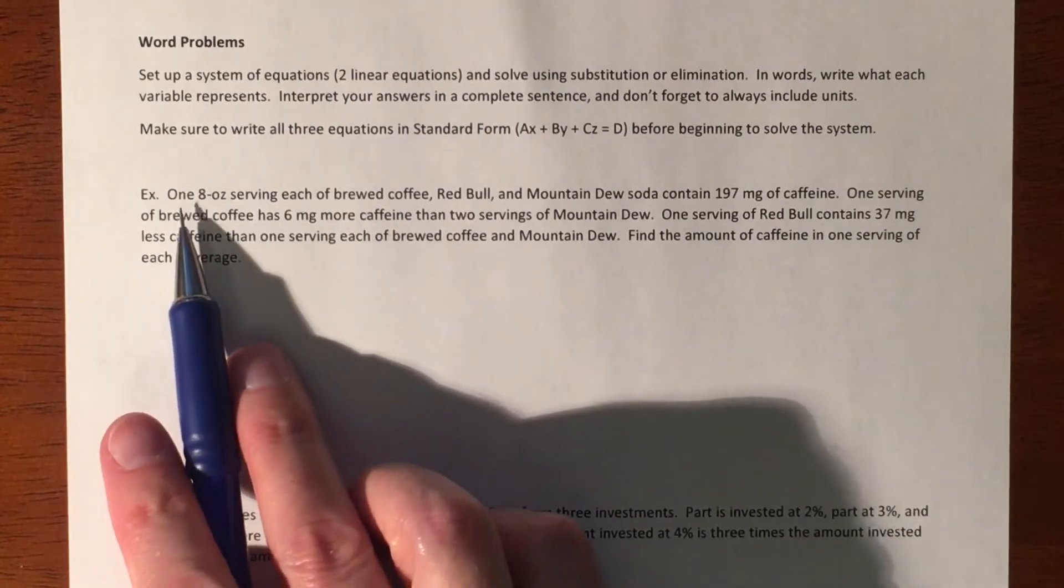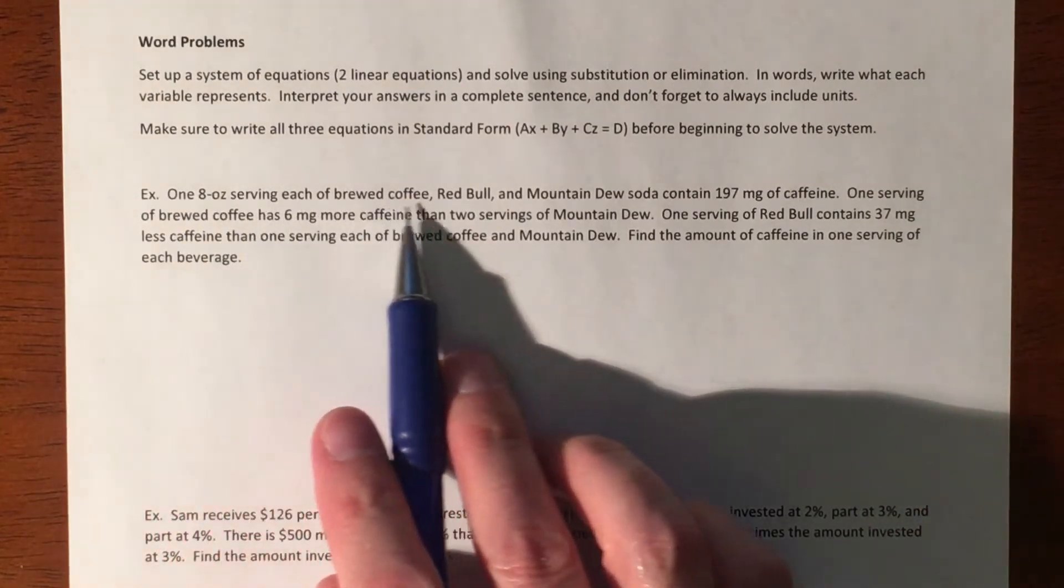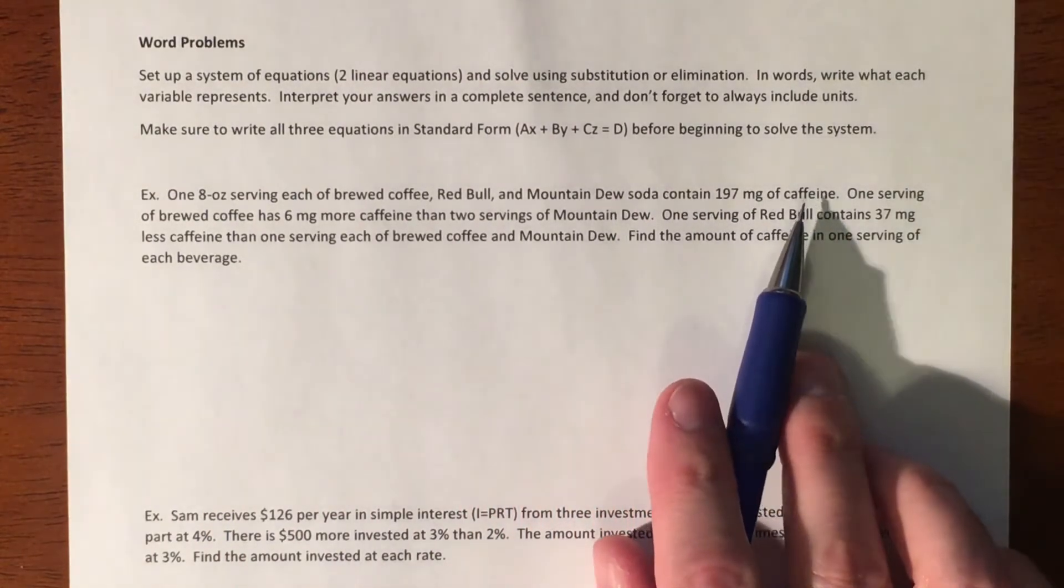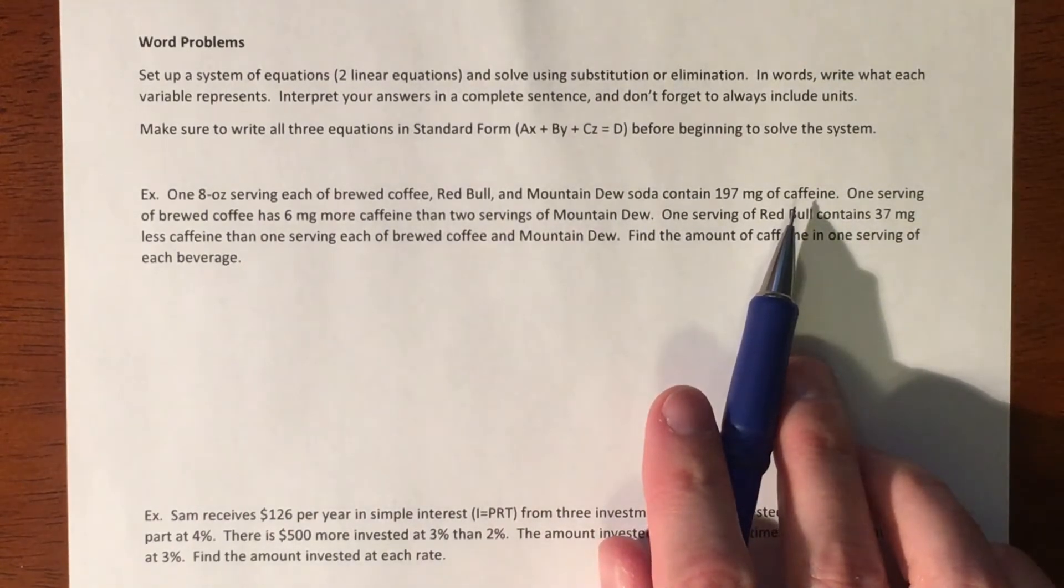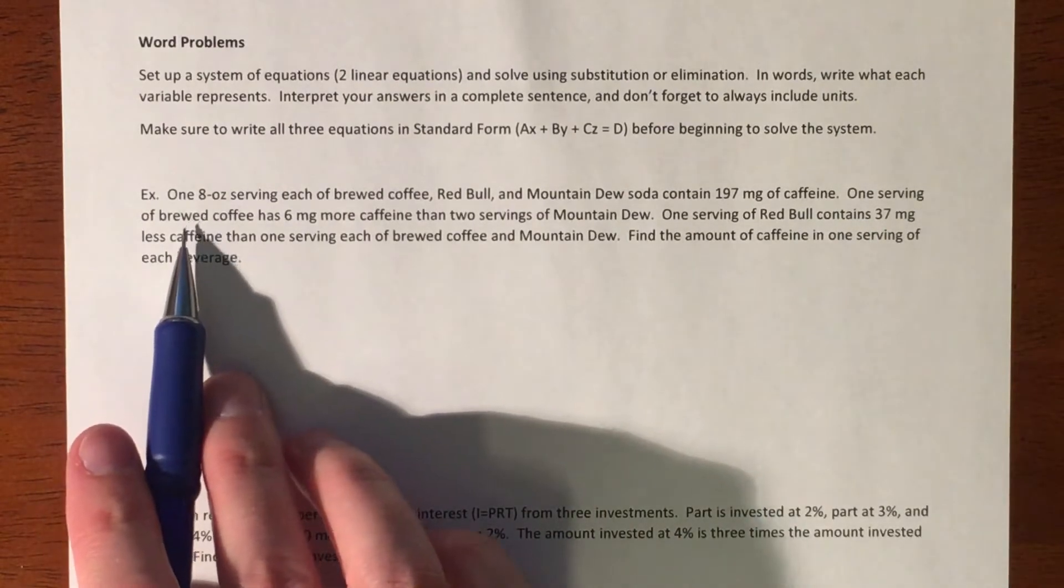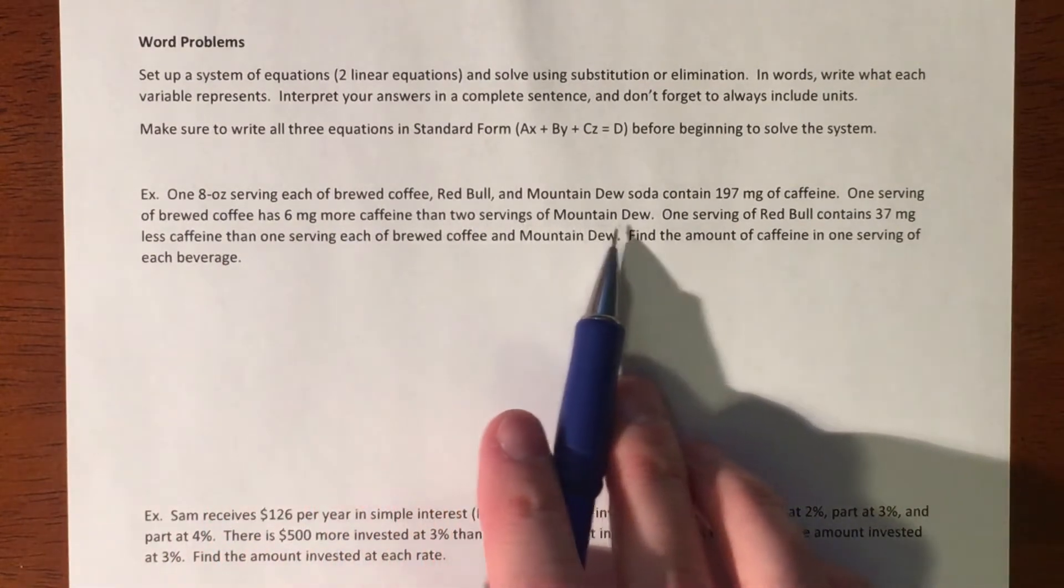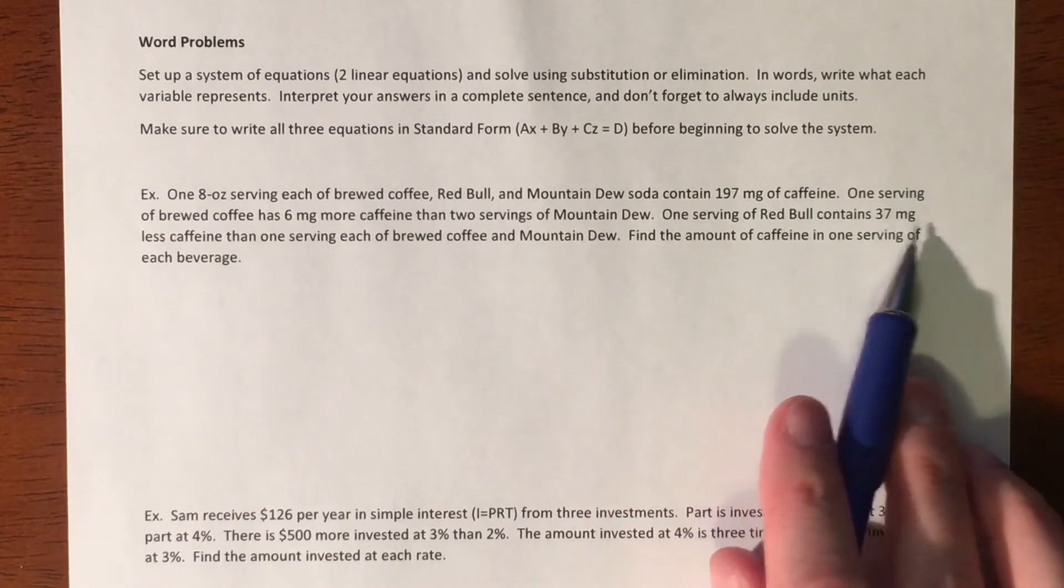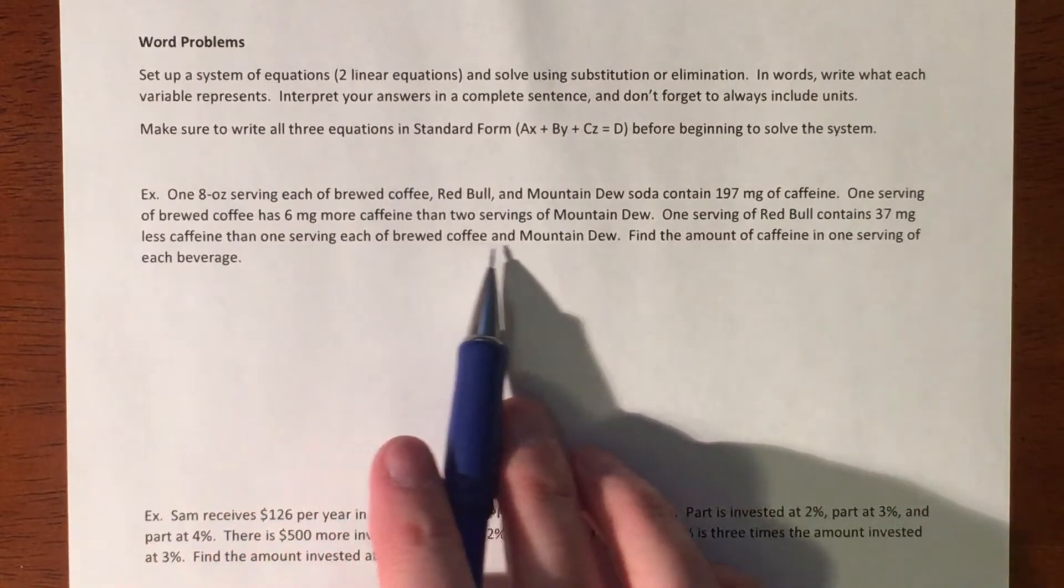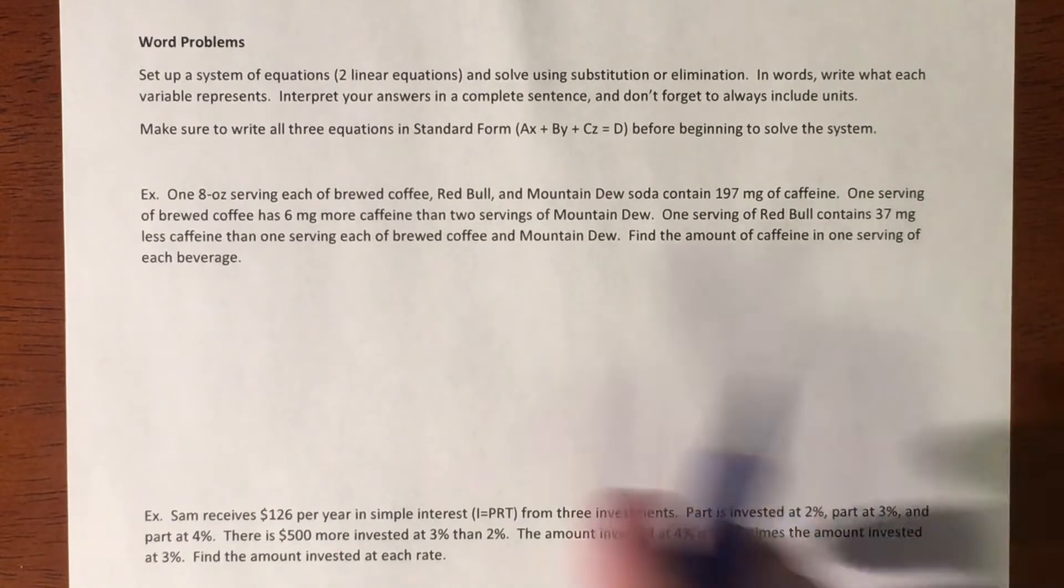Problem number one: One eight ounce serving each of brewed coffee, Red Bull, and Mountain Dew soda contains 197 milligrams of caffeine. One serving of brewed coffee has six milligrams more caffeine than two servings of Mountain Dew. One serving of Red Bull contains 37 milligrams less caffeine than one serving each of brewed coffee and Mountain Dew. Find the amount of caffeine in one serving of each beverage.